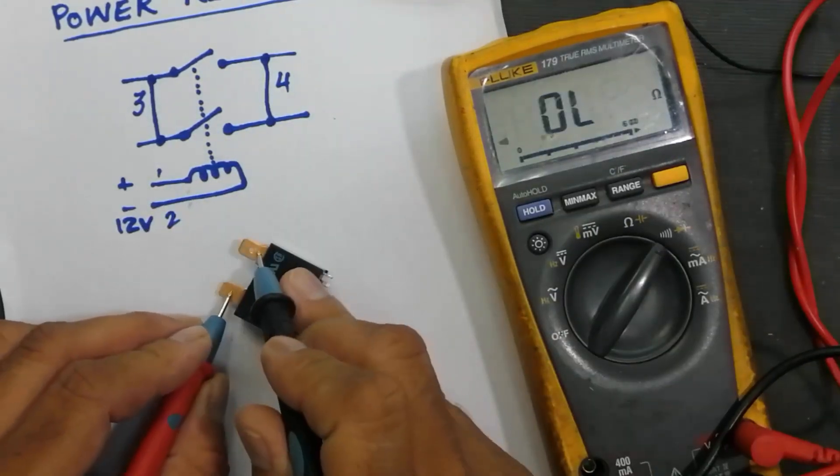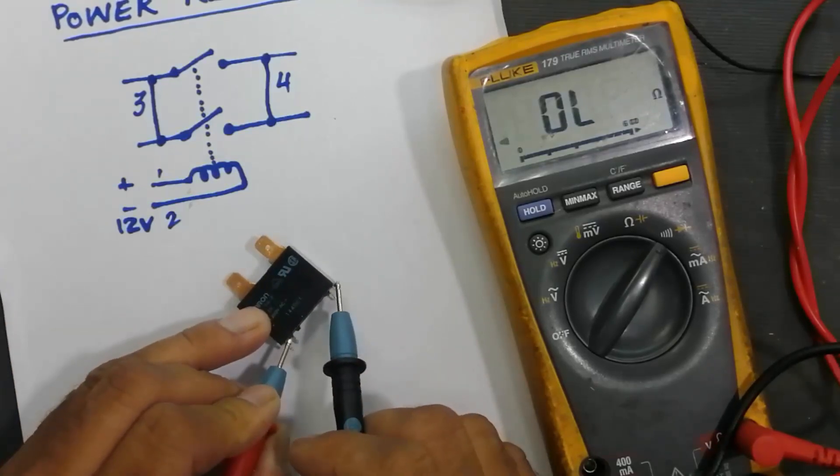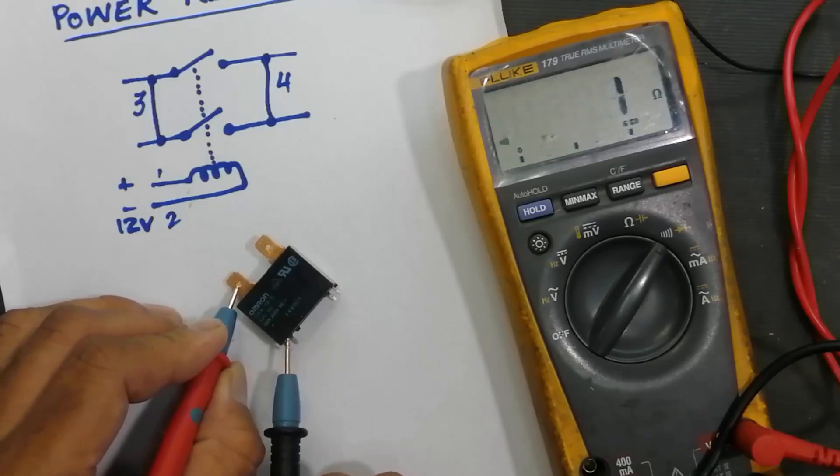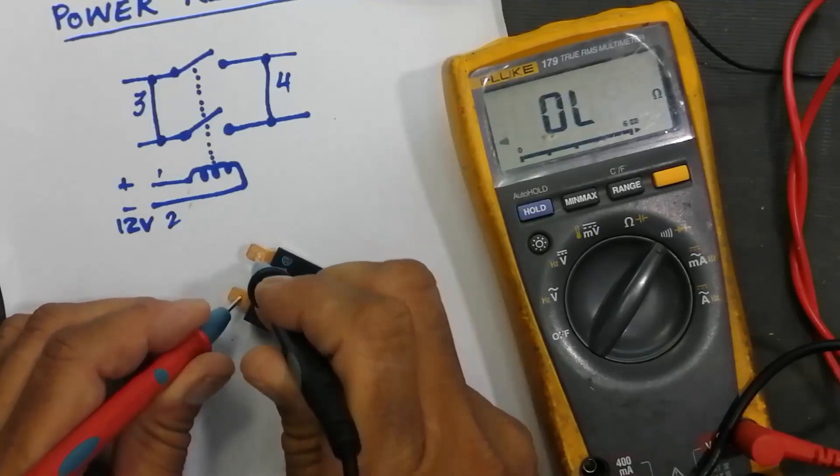Now the other thing. These points should open to each other. This point must be open to each other. But in this way it should give continuity. Now this point is open.